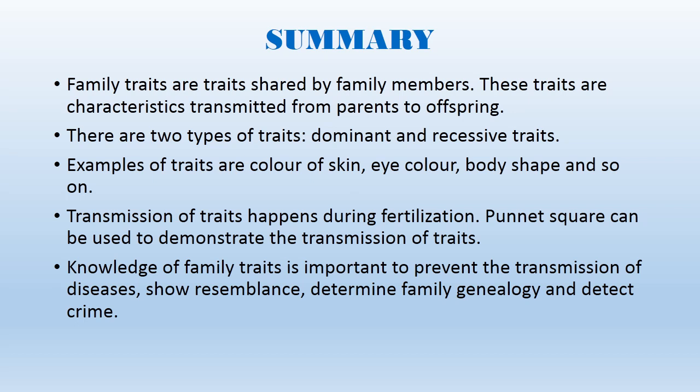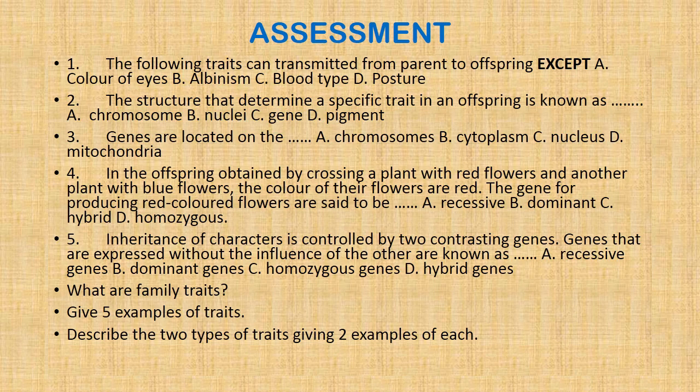Now let's go to the summary. Family traits are traits shared by family members. These traits are characteristics transmitted from parents to offspring. There are two types of traits: dominant and recessive. Examples of traits include skin color, hair color, and body shape. Transmission of traits happens during fertilization, and the Punnett square can be used to demonstrate this. Knowledge of family traits is important to prevent transmission of diseases, show resemblance, determine family genealogy, and detect crime. Learners, I want you to pause the video, answer the assessment questions, and see how much of the lesson you've understood. Thank you, and I'll see you in the next class.